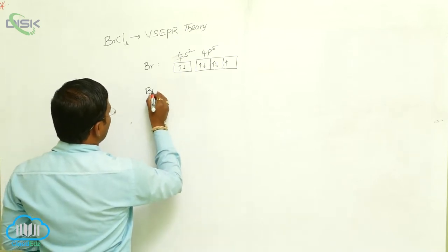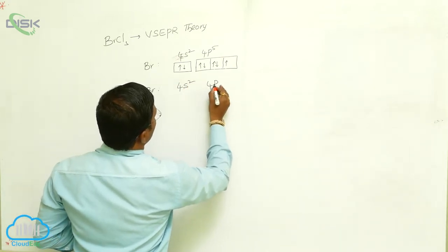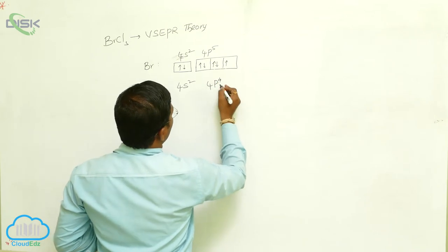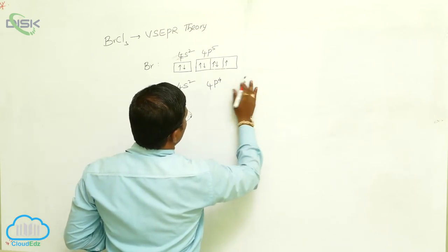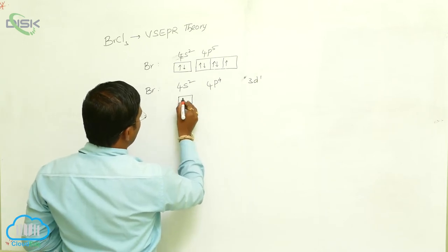bromine in its first excited state has 4s², 4p⁴, 4d¹ configuration.